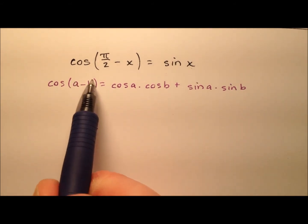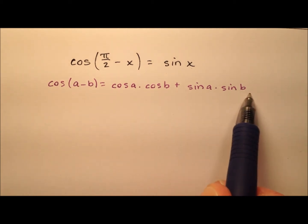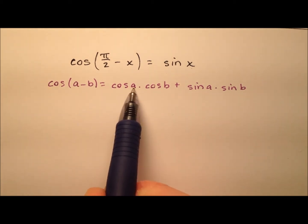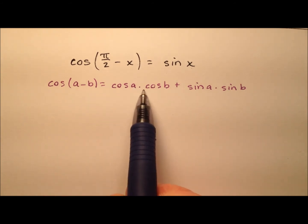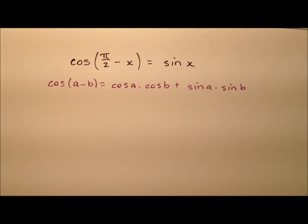So we have cosine of, and then we're subtracting two angles, a and b, and we have this expansion that goes with it, so it's going to be the cosine of a, which is the first angle, times the cosine of b, which is the second angle, plus the sine of a times the sine of b.